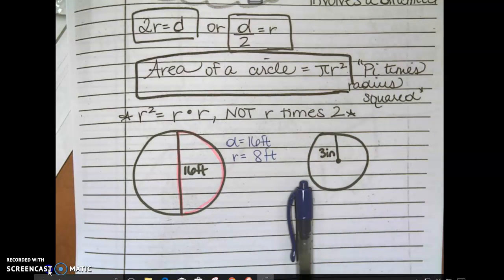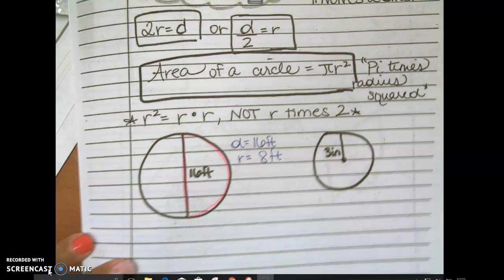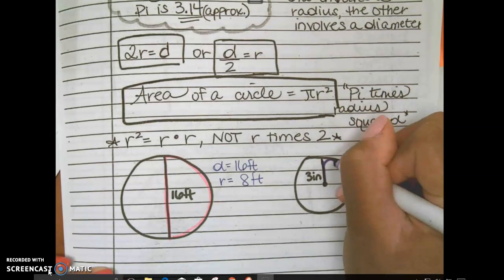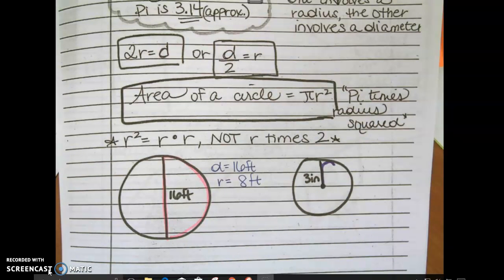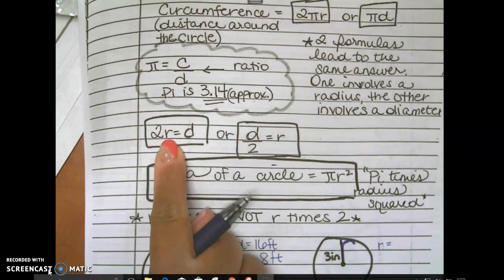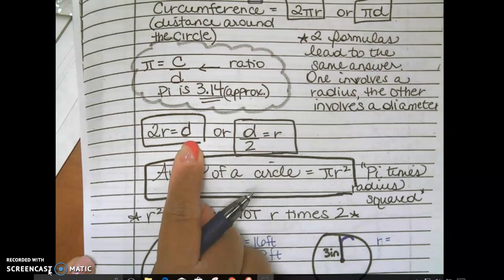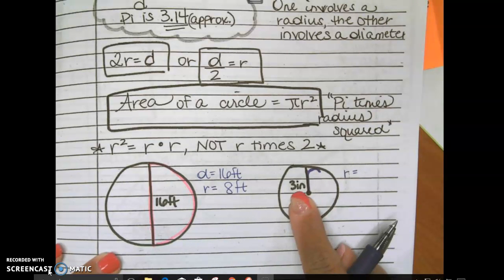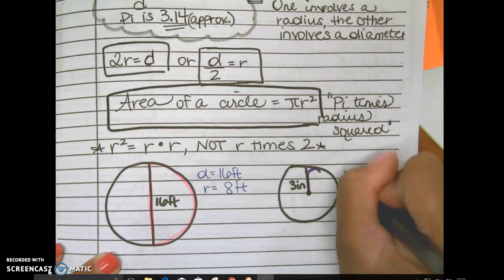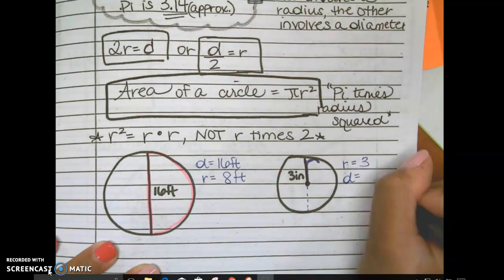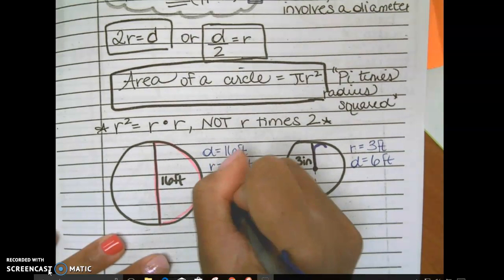Now over here, I don't have the long line. I have a short line. What letter did I just draw? R. What is R for? Radius. So if I have a radius, what must I do to it to get diameter? Multiply by 2. So what is my radius here? 3 inches. And then my diameter would be 6 inches.